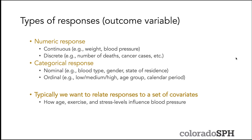Outcome variables or responses can be numeric or categorical. Numeric responses take on values that are numbers, and they can be either continuous or discrete. Continuous numeric responses are not restricted to specific values — they can take on any value in a given range, with examples including weight and blood pressure. Discrete responses can only take on specific particular values, for example number of deaths, which would be an integer response.